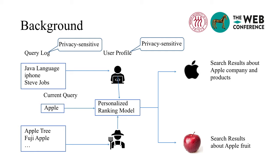We mine the user's preferences from the log to build her interest profile. For example, we infer the first user may be an IT engineer, and the second user is a fruit farmer. Currently, both users issued query Apple. The personalized ranking model should return search results based on the issued query and the user profile. Thus, results about the Apple company and products tend to be returned to the first user, while search results about fruit Apple are returned to the second user.